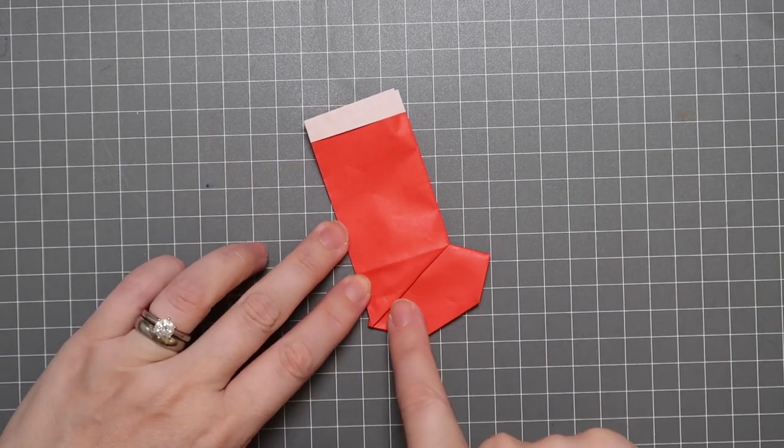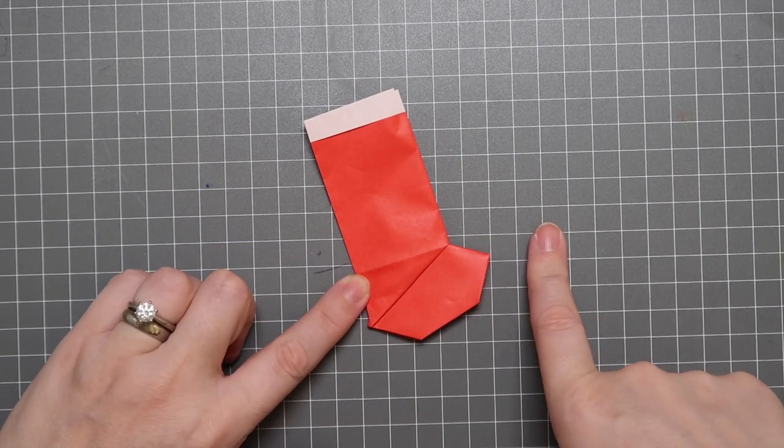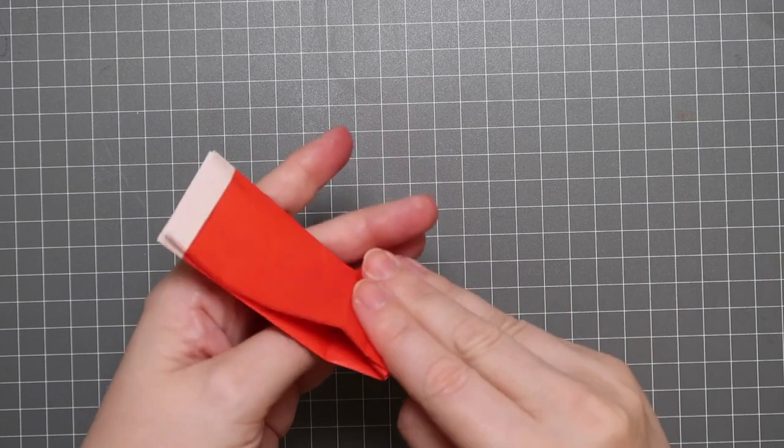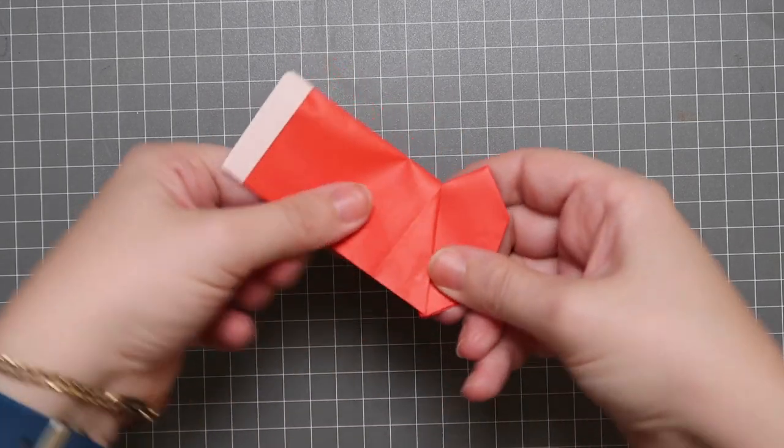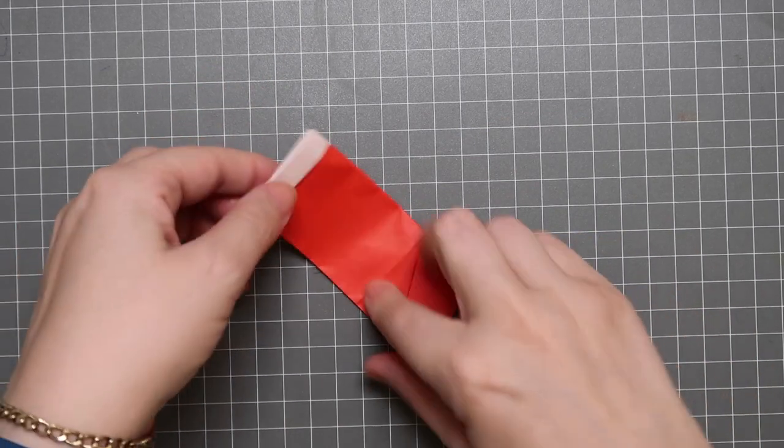And what that does is creates the sock, or the foot, of the stocking. Isn't that remarkable? I love origami. It's so fun. And it will just slide out and almost lock into place when you press it down to create a crease.